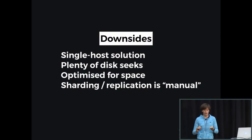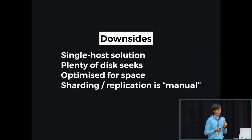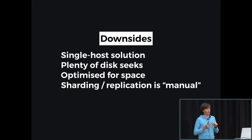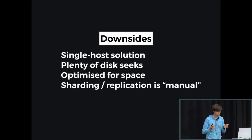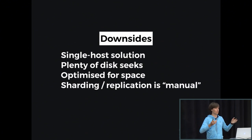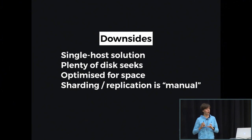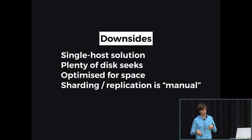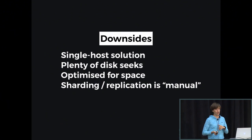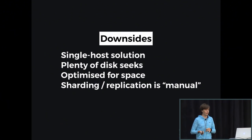The downsides of Graphite are: first, it was created in an era when distributed applications were not in high demand, and the amounts of data Graphite was supposed to handle were much smaller than what we'd expect for the average application today. It also requires plenty of disk seeks to retrieve data, because every aggregate is stored in a file per metric per aggregate. It was optimized for space in a way, but sharding and replication are done in a rather manual way.